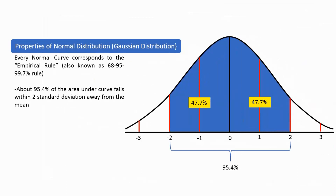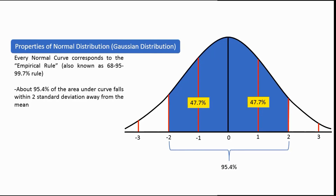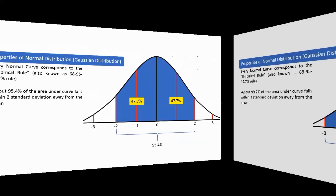For 95: about 95.4% of the area under the curve falls within two standard deviations away from the mean. With the mean at 0, counting two to the left gives up to negative 2. The area from 0 to negative 2 is 47.7%. And from 0 to positive 2 to the right, the area is also 47.7%. Adding these two areas gives us 95.4%.